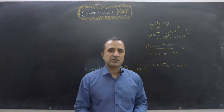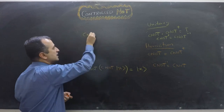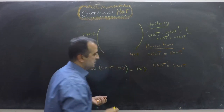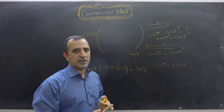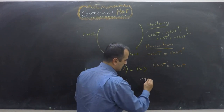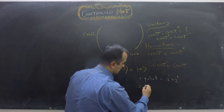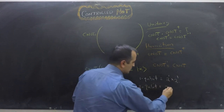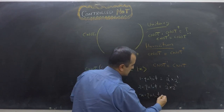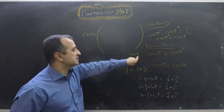Like all quantum gates, the CNOT gate can be expressed in matrix form — specifically a 4×4 unitary matrix. For a single-qubit gate we need a 2×2 matrix (2¹ × 2¹). For two qubits we need a 2² × 2² = 4×4 matrix, and for n qubits we need a 2ⁿ × 2ⁿ matrix.